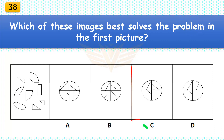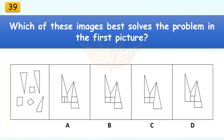Which of these images best solves the problem in the first picture? The correct answer is C. There are eight pieces in the assembled puzzle, three of which are triangles.